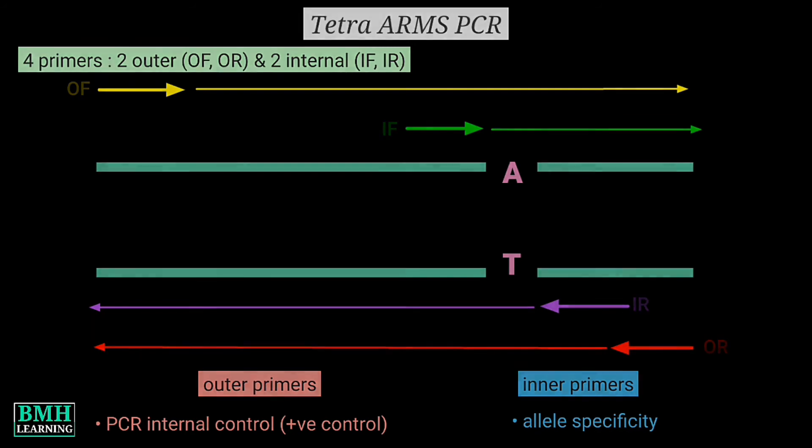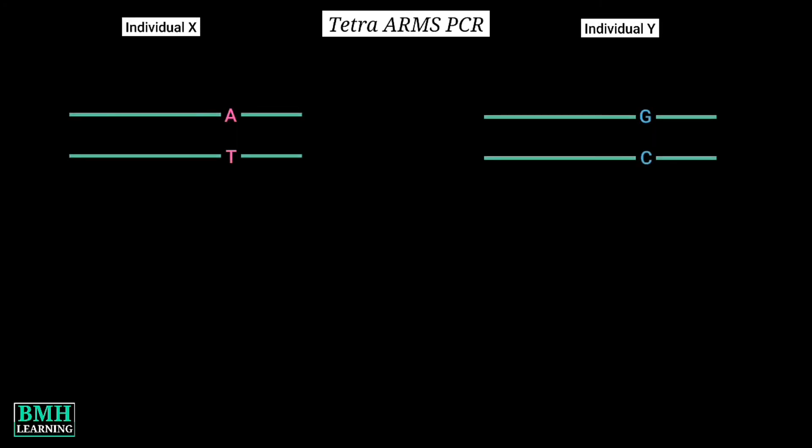Let's elaborate it more. We know there are two alleles or forms of a gene. Suppose there are two individuals, Individual X and Individual Y. There is a single nucleotide change in the gene sequence of these two individuals which would ultimately lead to two different products.